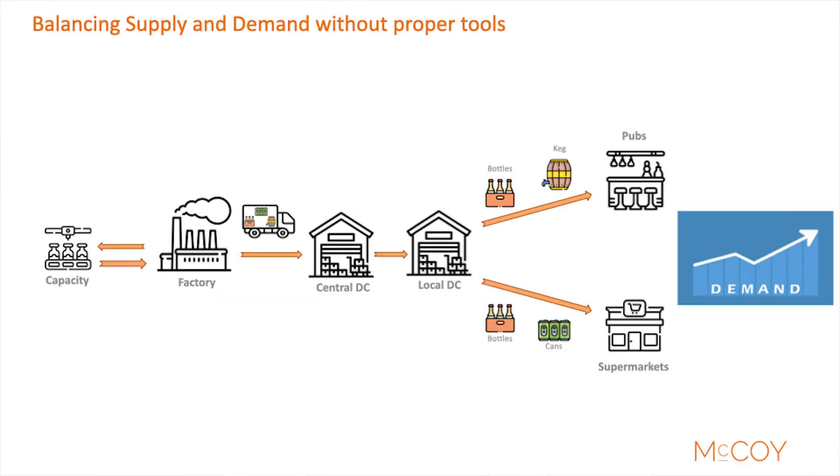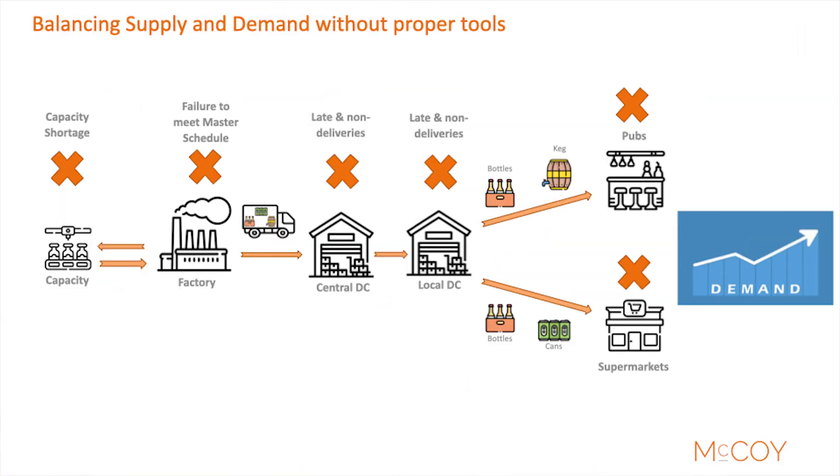Now we understand how supply planning works and we have seen how SAP IBP makes supply planning easy. Let's take a moment to see how IBP can be used to balance supply and demand. Without proper techniques like demand planning, DRP, MPS, and RCCP, we will not be able to effectively assess the impact of our demand plan on our supply network. Thus, we will not be able to balance supply and demand.